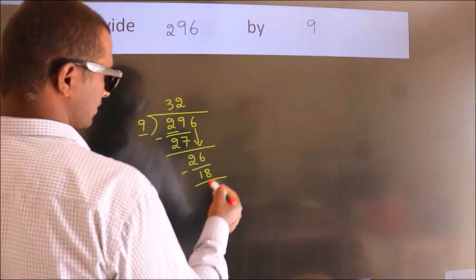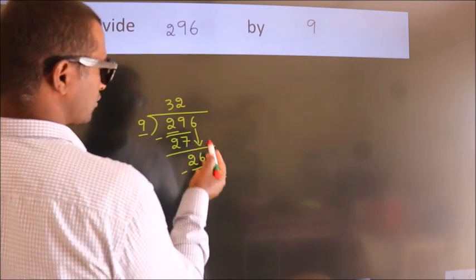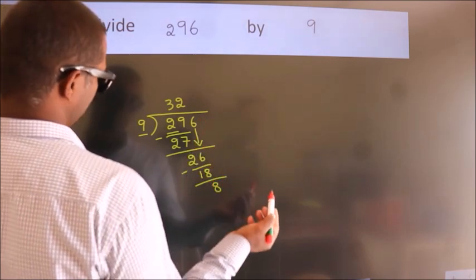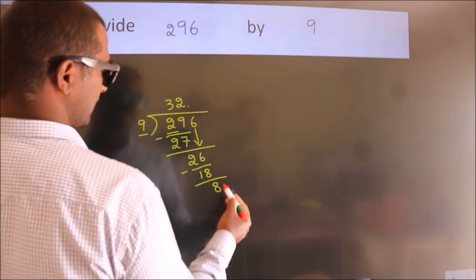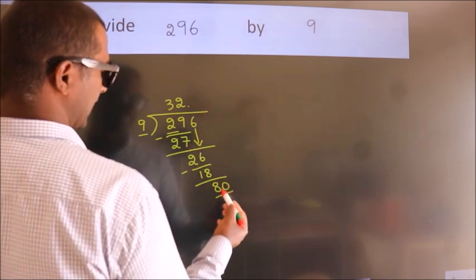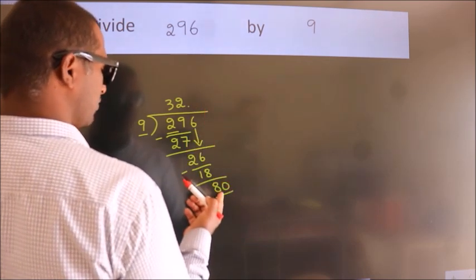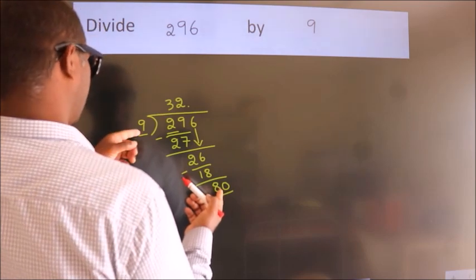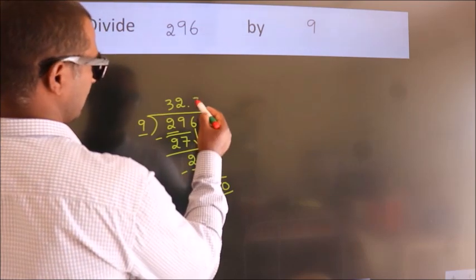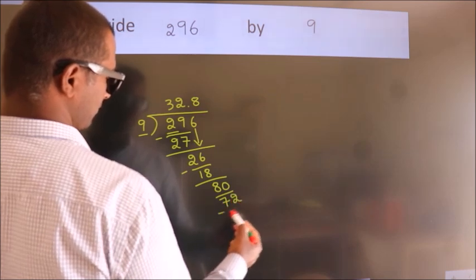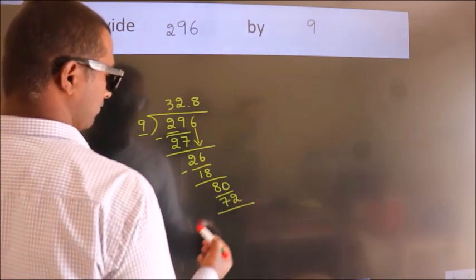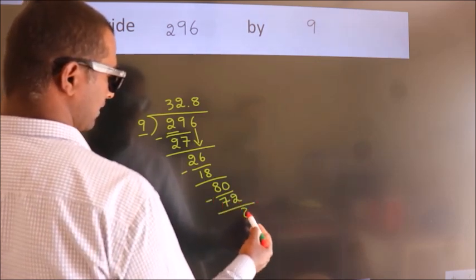After this, no more numbers to bring down. So what we do is put a dot and take 0, making 80. A number close to 80 in the 9 table is 9 eights, 72. Now we subtract. We get 8.